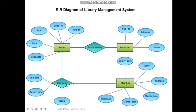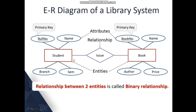In this ER diagram, 'published by' and 'borrowed by' are the relationships between these entities. The 'borrowed by' relationship also has attributes such as the date the book was borrowed, the return date, and the issue type or issue method. A relationship between only two entities is called a binary relationship.